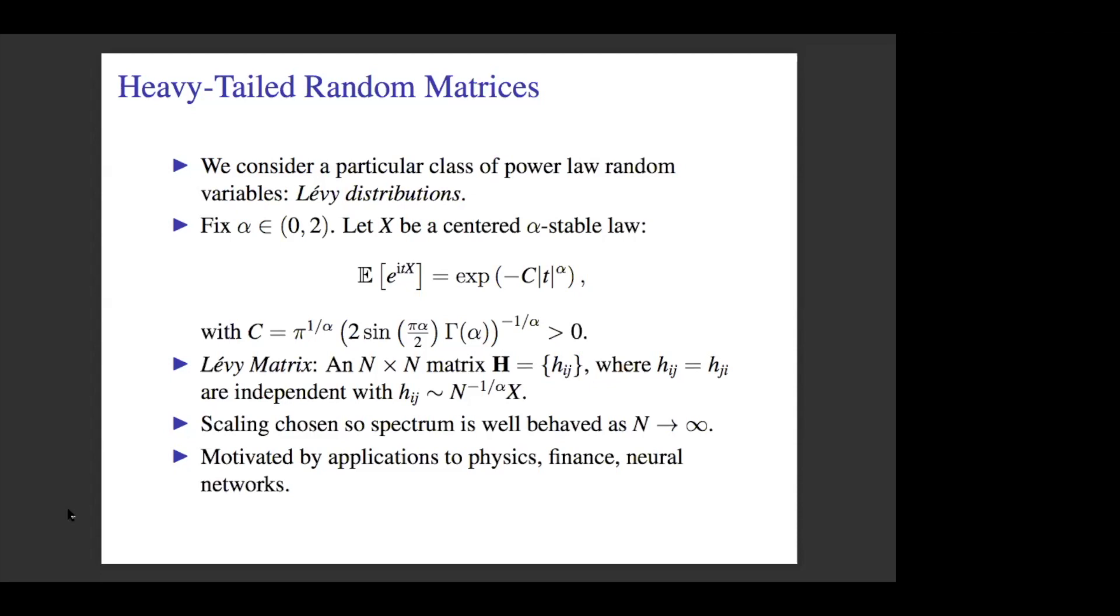You can think of these as the analog of Gaussians in the heavy-tailed case. Just like Gaussians, if you take a bunch of finite variance variables, add them, and normalize appropriately, they converge to a Gaussian. These are the heavy-tailed analogs: if you take heavy-tailed variables, add them, and normalize appropriately, you get Levy distributions. They have very explicit characteristic functions. Although I'll focus on this particular distribution, everything I'm going to say works for symmetric power laws with heavy-tailed powers.